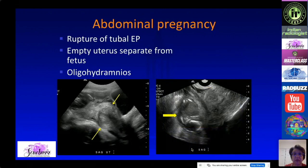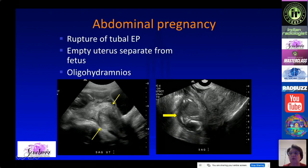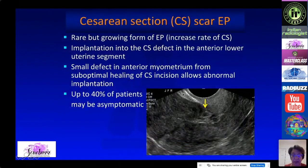Abdominal pregnancies are very uncommon — likely resulting from a ruptured tubal ectopic that reimplants into the abdomen. You will see an empty uterus with a fetus that is separate, often with oligohydramnios. Some cases are more advanced, and MRI is excellent for making this diagnosis.